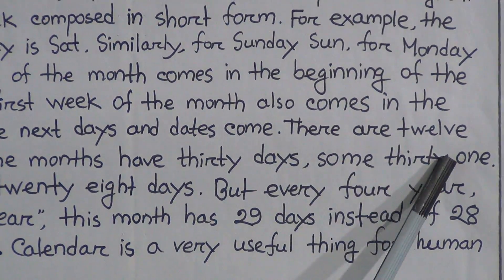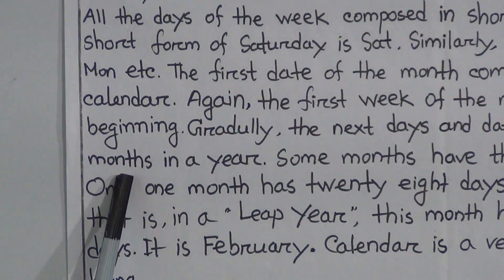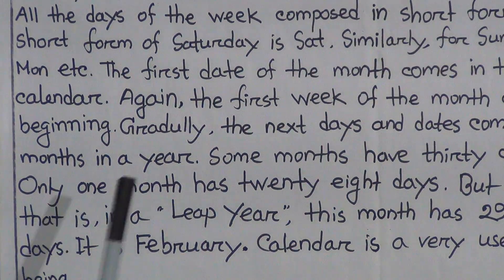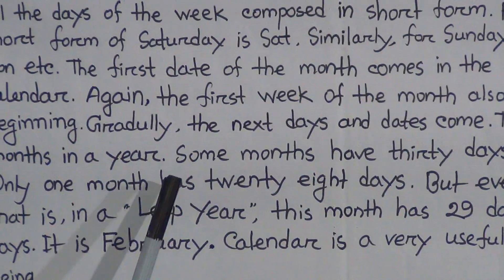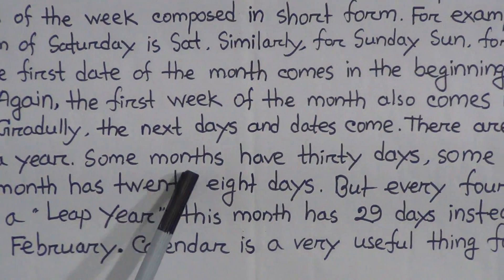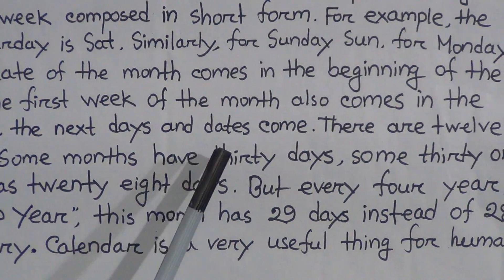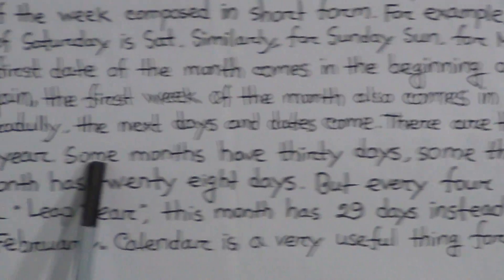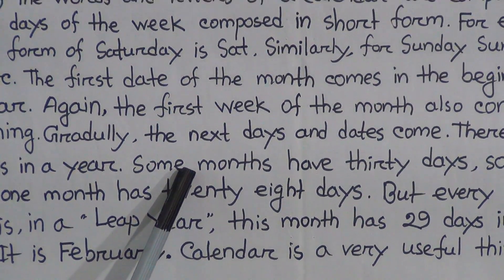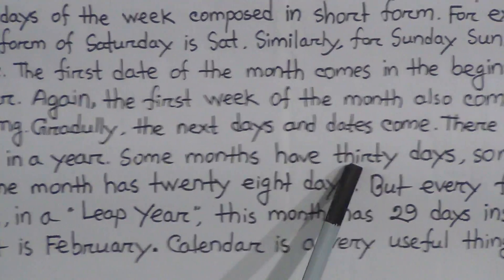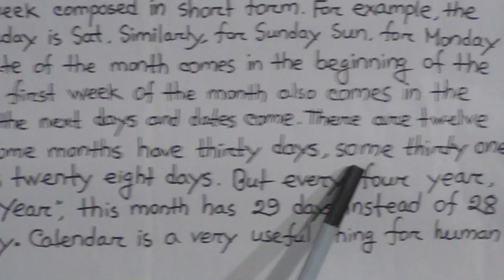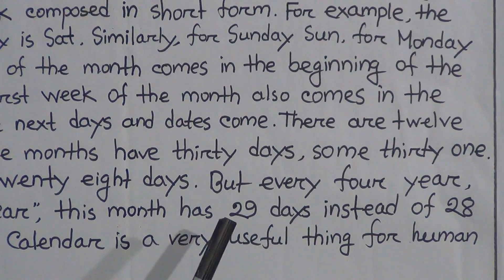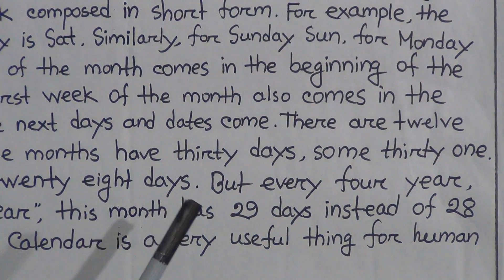There are 12 months in a year. Some months have 30 days, some months have 31 days.